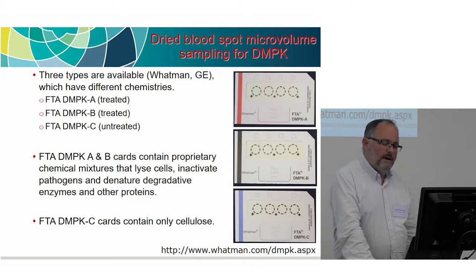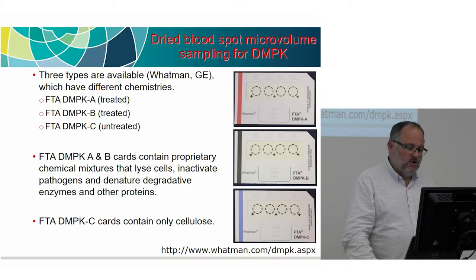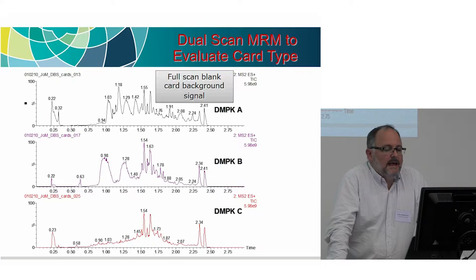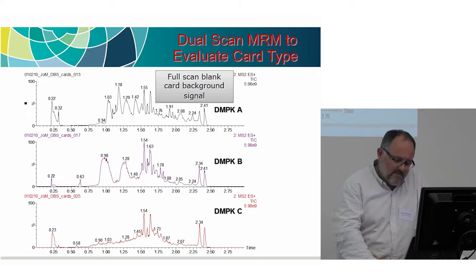I'll quickly talk about what I said before about cards having an effect. I've got some Whatman cards here — some are treated, some are untreated. Some are treated with chemicals that lyse cells, inactivate pathogens, or degrade enzymes. What we have here is three cards and we've done a full scan of the background signal. There's an enormous amount of extra things coming off these cards — and these are cards with no samples, just the proprietary treatments on the card. We've got to look at whether that impacts our chromatography and results. It's another variable to consider.